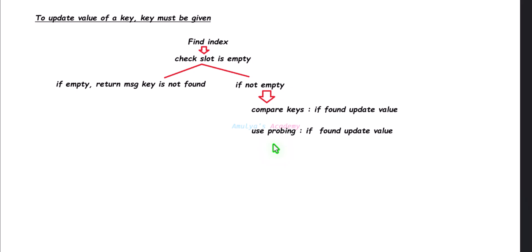If collision is handled using the open addressing method in the hash table, then we need to compare the given key and the key present in the slot. If a match is found, update the value; if not, use the probing method to find the key and update the value. If the key is not found, return the message 'key is not found'.